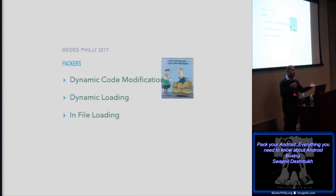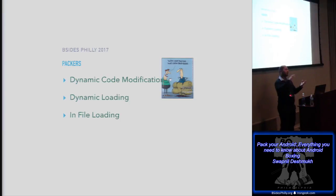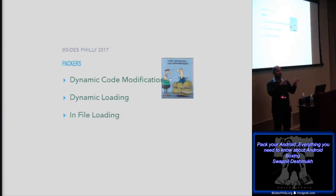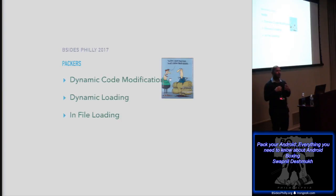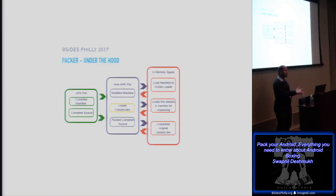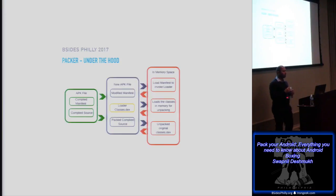After obfuscation, the second hardening technique is the Packer. Packers do dynamic code modification. Android supports two execution environments: Dalvik and Android Runtime. Dalvik supports dynamic code loading, so most packers have native code that injects new code into a stub. That stub creates the decrypted code to decrypt the real classes.dex. A second technique is in-file loading - they modify the header bytes to hide the classes file in the buffer and pull it out and decrypt it.